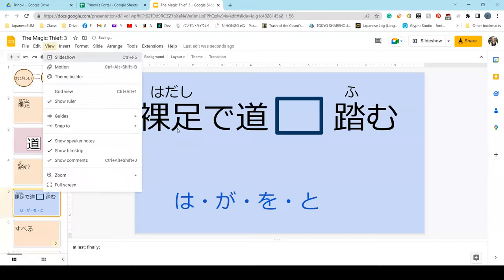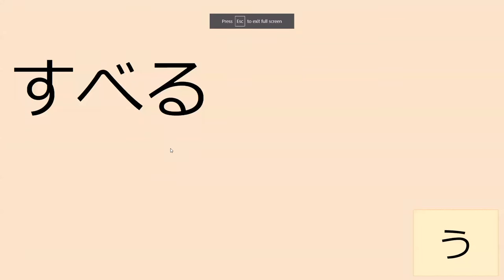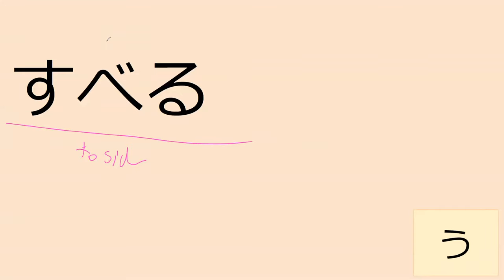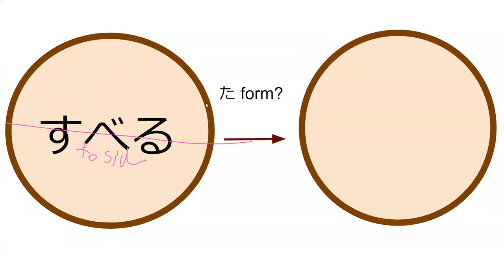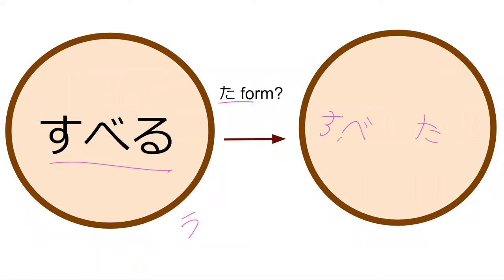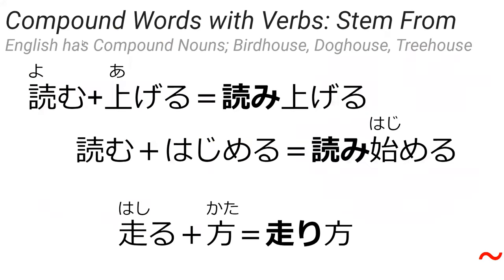We basically just did this. The next one is suberu — suberu is a ru-verb and it means to slide. It has a slidey-sounding name too. What do you think the ta-form of suberu might be, if it's an u-verb? It's subetta — there's a small tsu right here. So subetta is the ta-form of suberu.